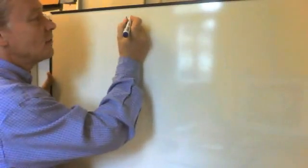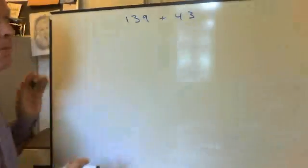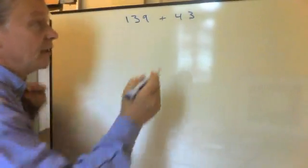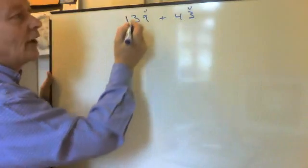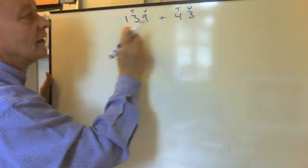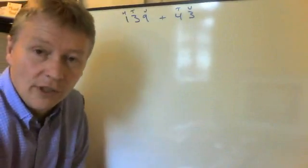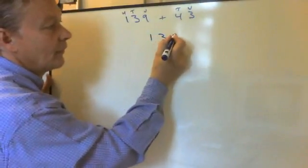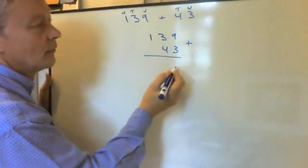so we're going to be adding together 139 plus 43. Now, the 3 and the 9 represent the units, the 3 and the 4 there represent the tens, and the 1 here represents the hundreds. And the way the formal method works is to say, what we'll do is we'll put it into a column like that,